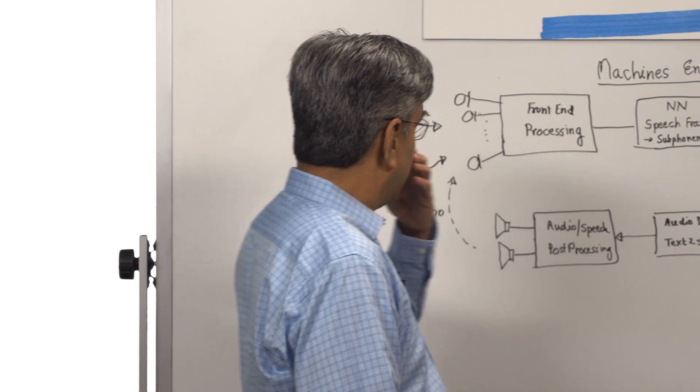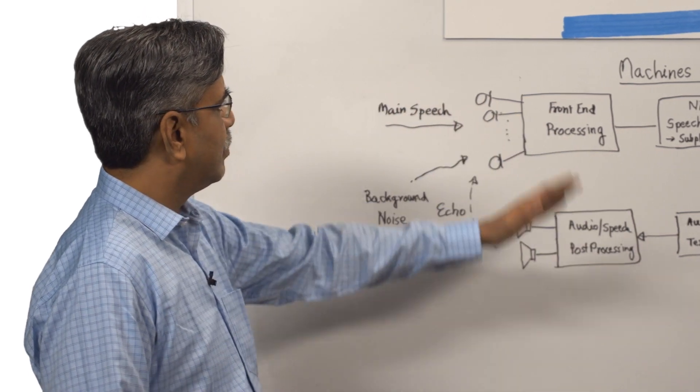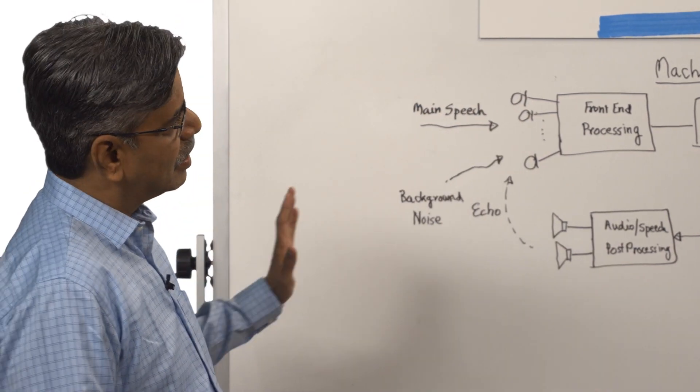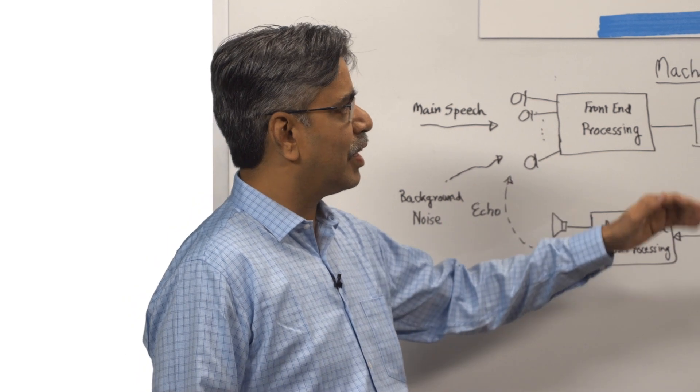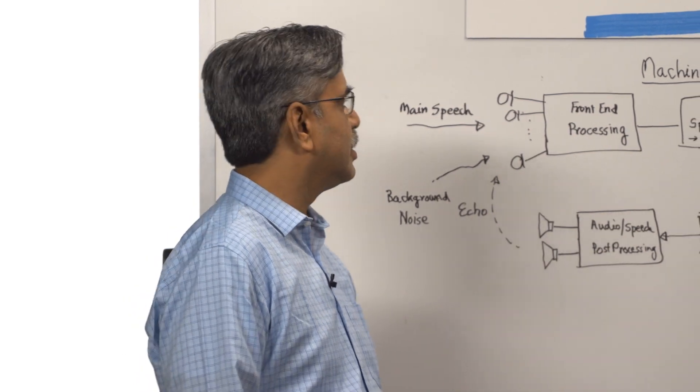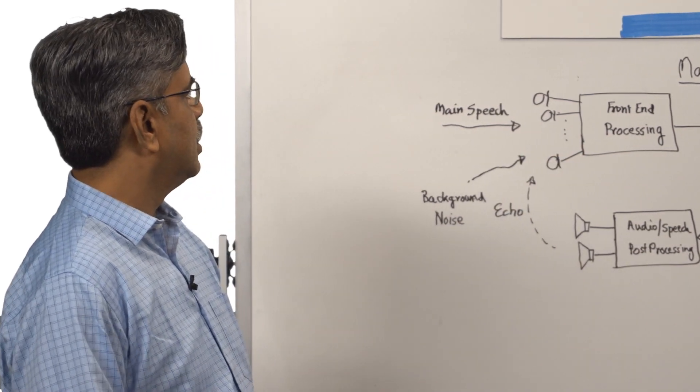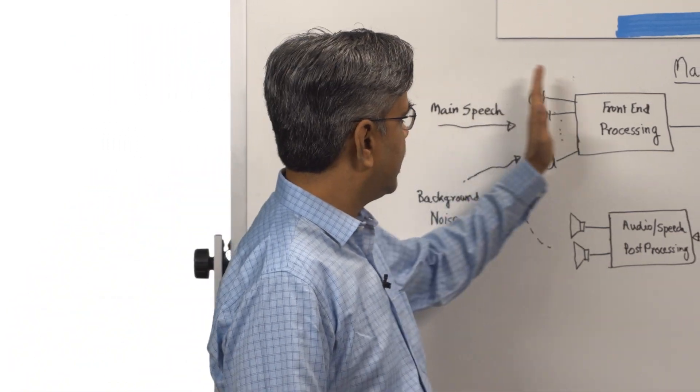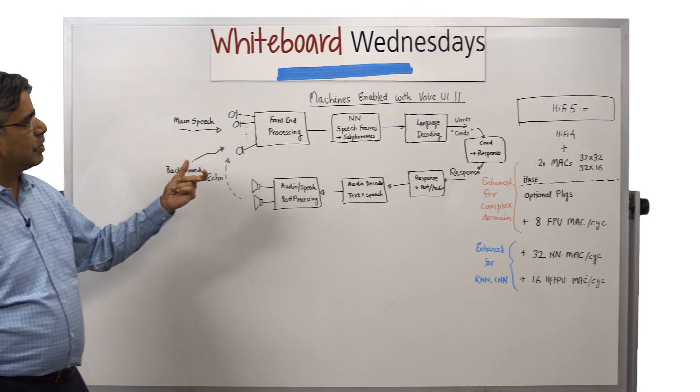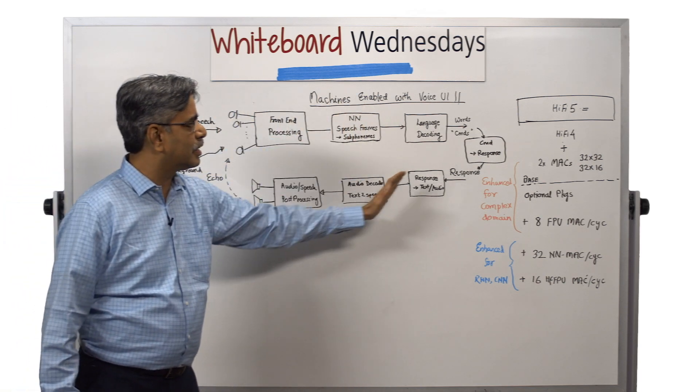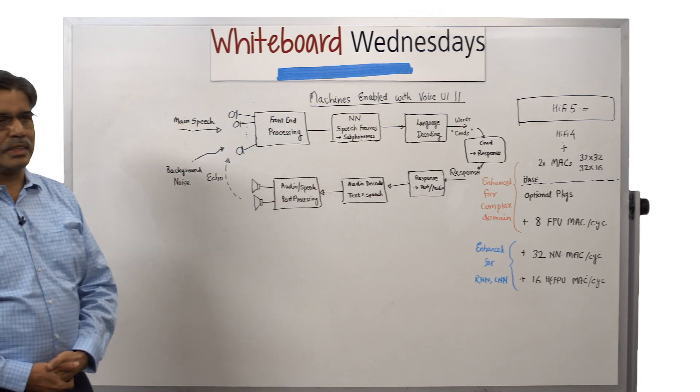I will go through the block diagram so that you will understand why HiFi 5 is getting introduced in this particular domain. A machine which is enabled for voice UI will typically have this flow of signals.